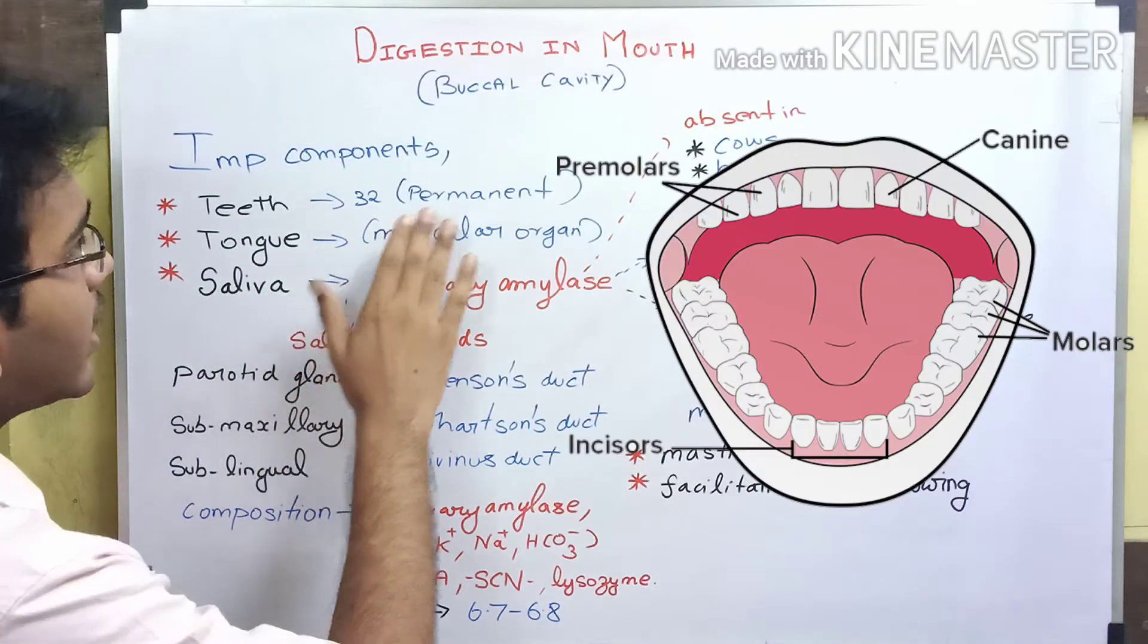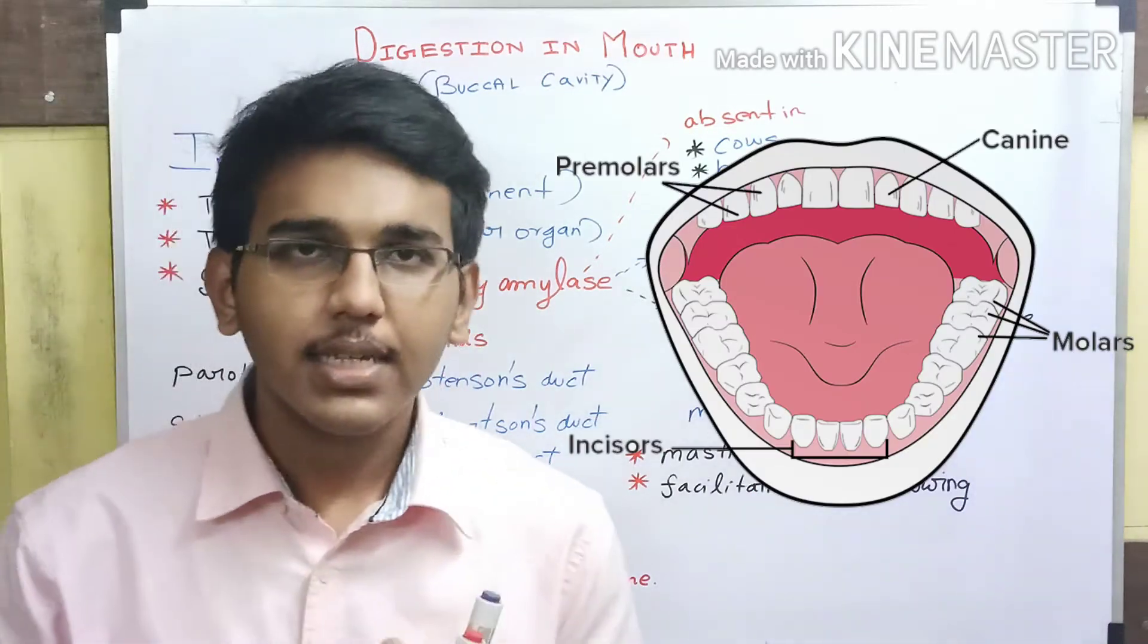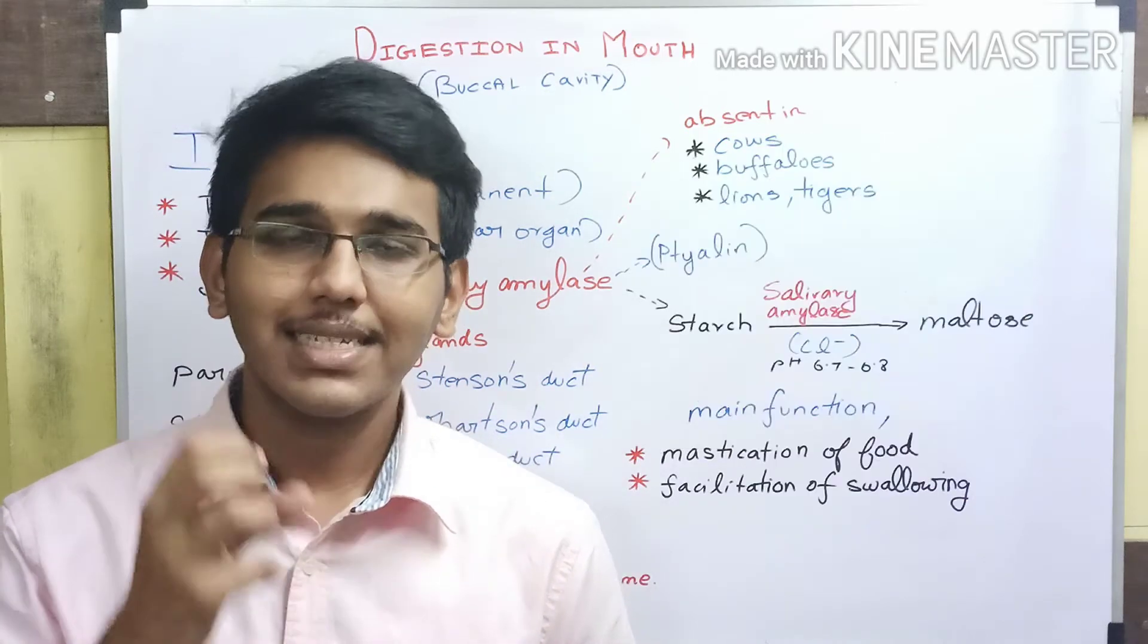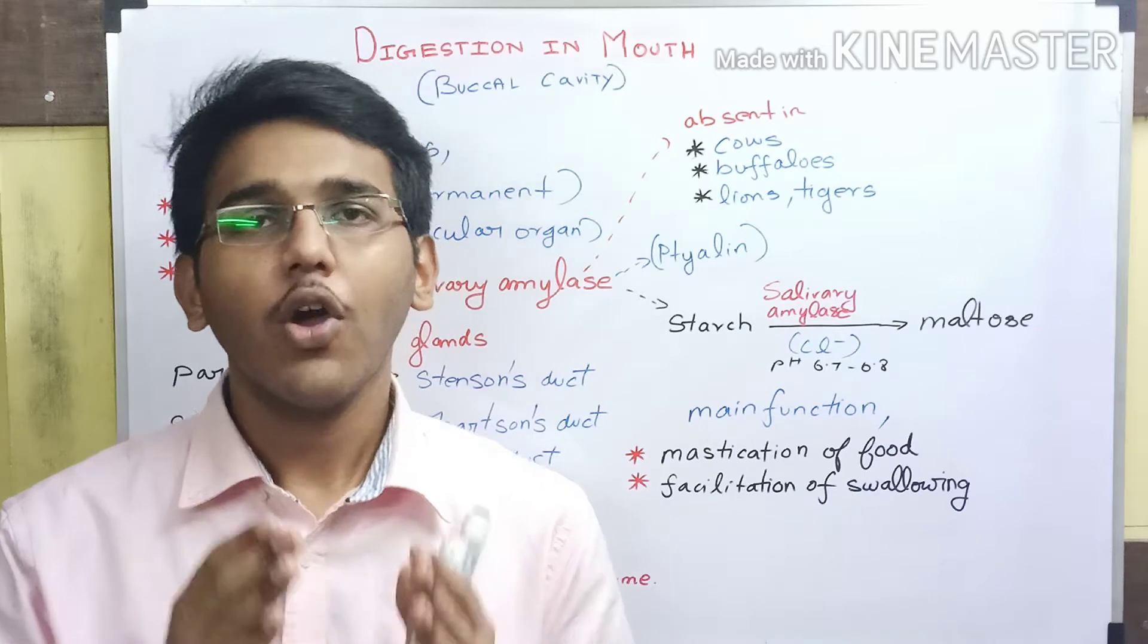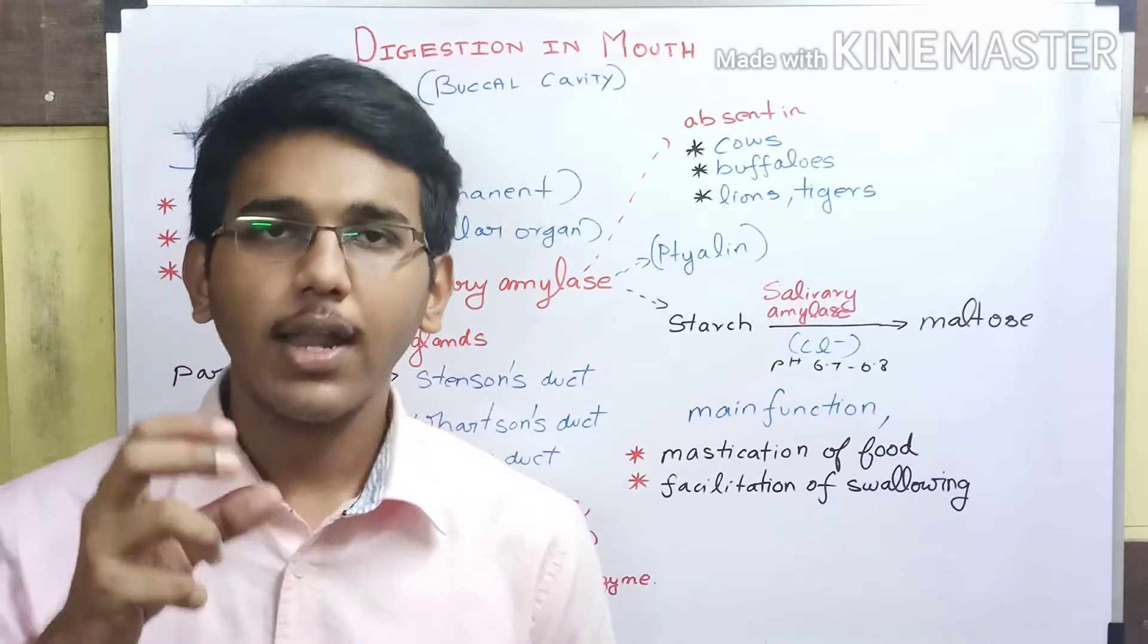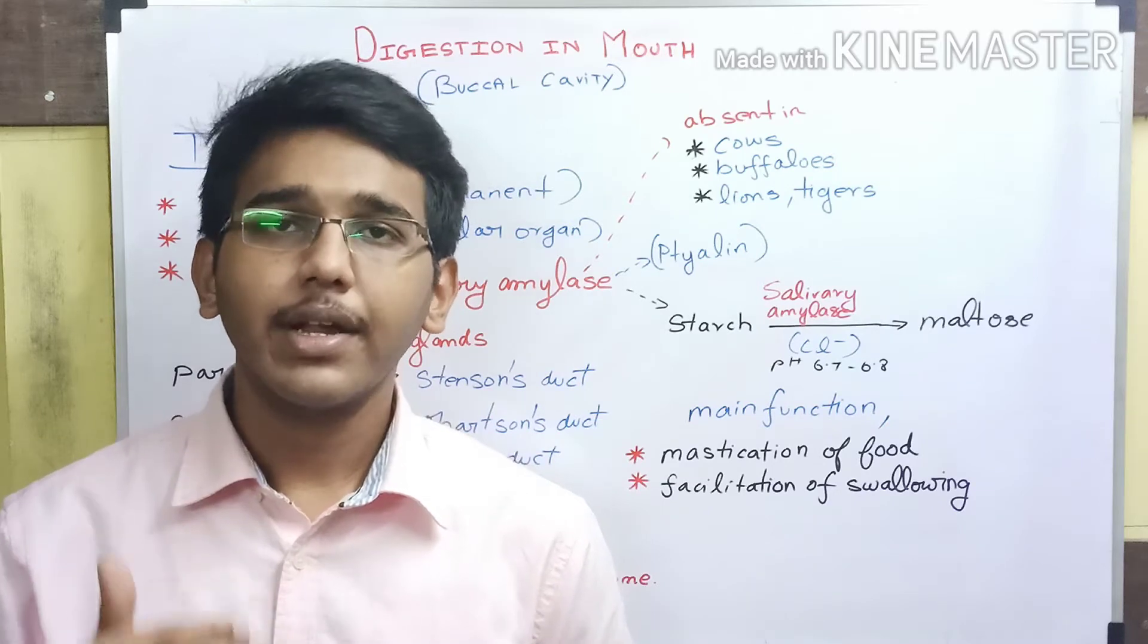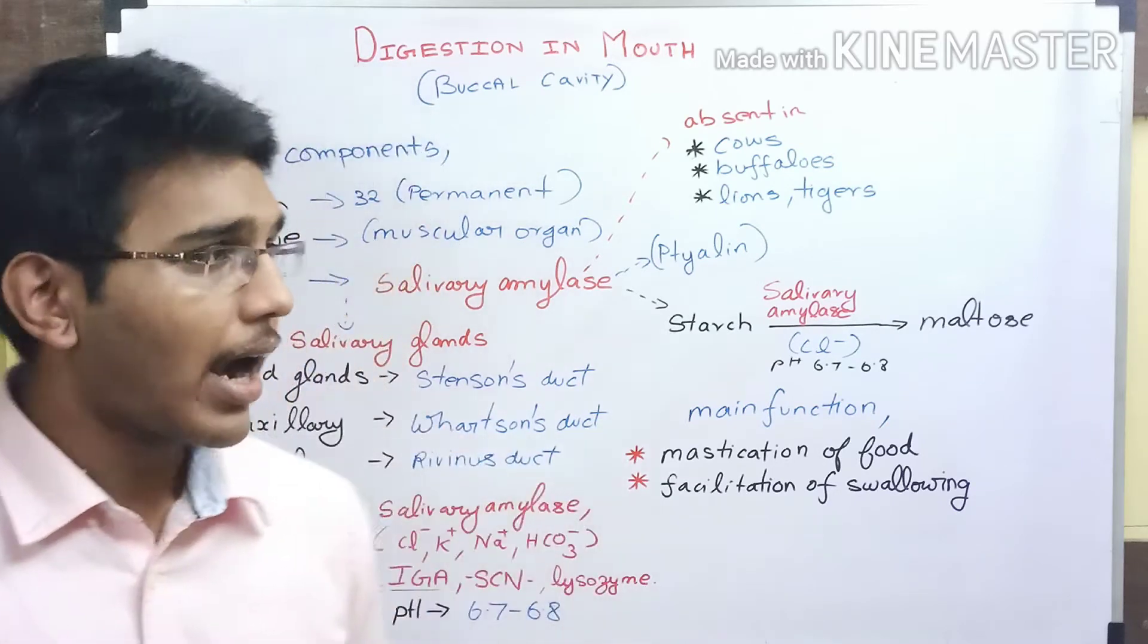There are 32 permanent teeth present in our buccal cavity which aid in mastication, the breakdown of food materials into smaller particles helpful for later organs in the alimentary canal for digestion.